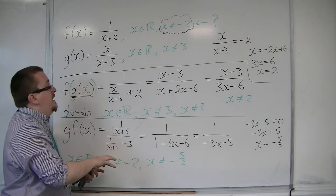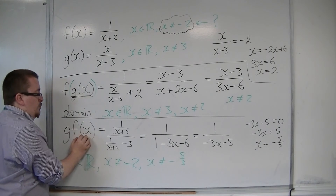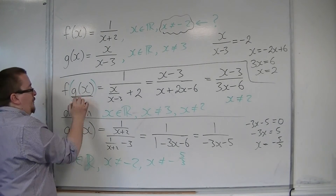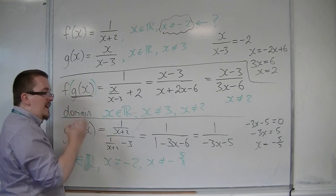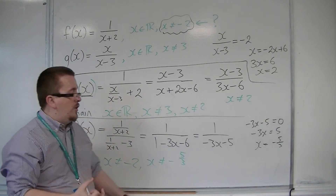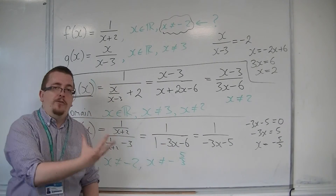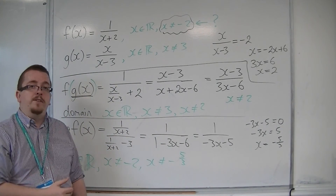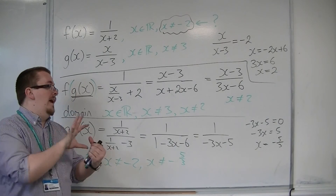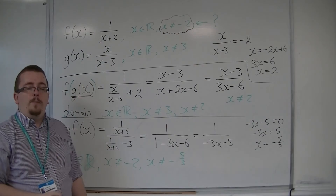So you take on the restriction from the first function, and then you have a restriction on the composite function itself. Those two must be combined — effectively, they must overlap.